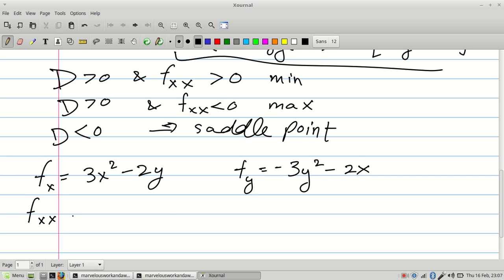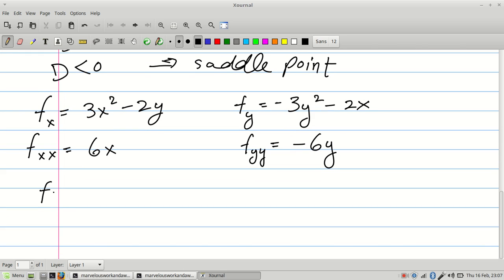So Fxx equals 6x, and Fyy equals negative 6y. Fxy is going to be negative 2. So now we can put together our functions.